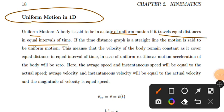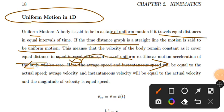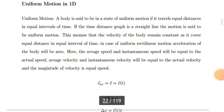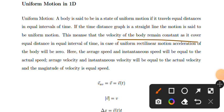When the body crosses equal distances in equal time intervals, the graph forms a straight line. This means that the velocity of the body remains constant as it covers equal distance in equal intervals of time.